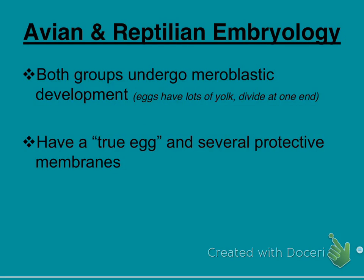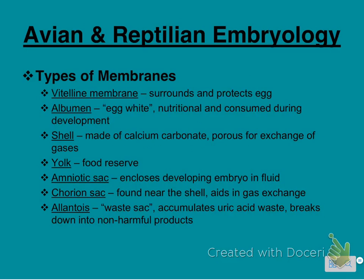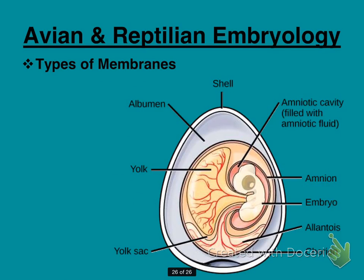Avian and reptile embryology — both are vertebrates, and both undergo meroblastic development, meaning lots of yolk divided at one end, unequally. They have a true egg with several protective membranes. You need to know what each membrane is and what it does, so pause and write these down and compare them to the labeled picture showing the yolk, yolk sac, shell, and amniotic cavity. We will get into this much more in class.